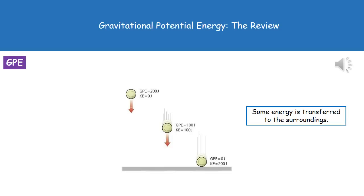If we release the ball, it will start to accelerate towards the ground. The gravitational potential energy will decrease and the kinetic energy will increase. In the second picture, we've got 100 joules of GPE and 100 joules of kinetic energy.